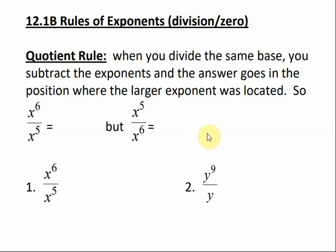Rules of exponents, division, and zeros. This is 12.1b, and we're going to talk about first the quotient rule. We've already talked about the exponent of one rule, the product rule, and the power rule, and this is the quotient rule.